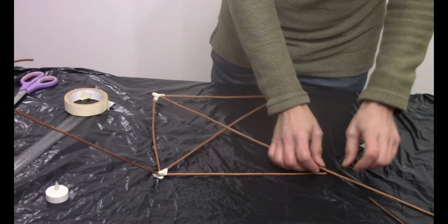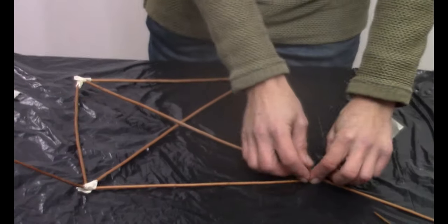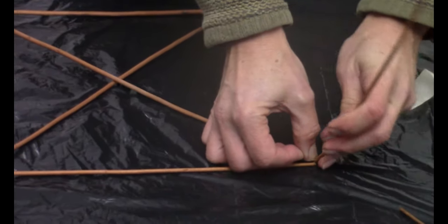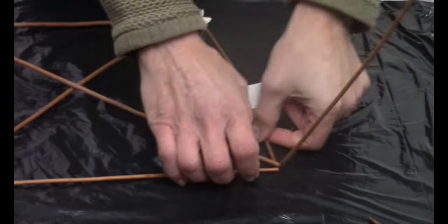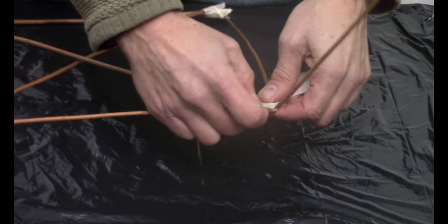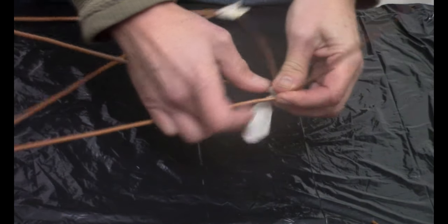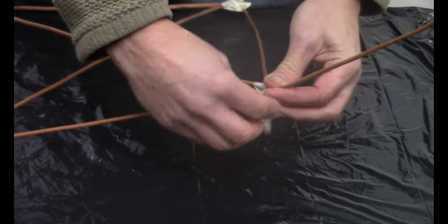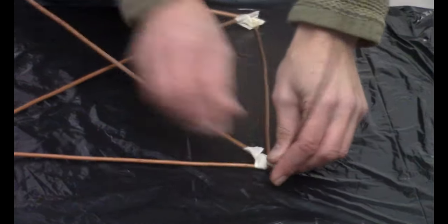And again, make sure it's square. It doesn't matter if the cross isn't right in the middle because the willow's not always the same length. So again, just stick that into the corner, like so.